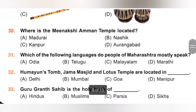30th. Where is the Meenakshi Amman Temple located? A. Madurai, B. Nashik, C. Kanpur, D. Aurangabad. The Meenakshi Amman Temple is located in Madurai. Madurai is located in Tamil Nadu. Option A is the correct answer.